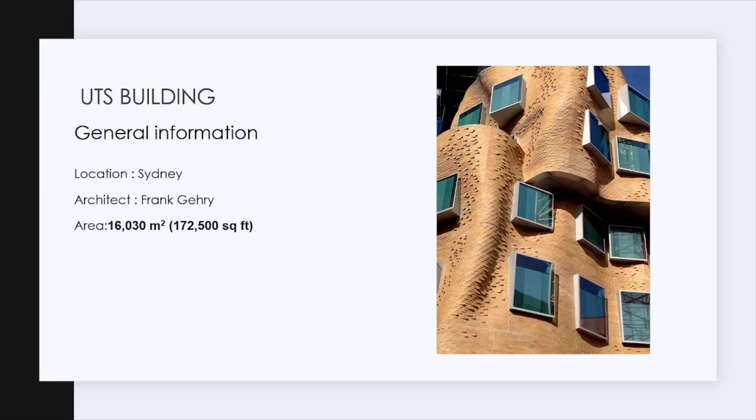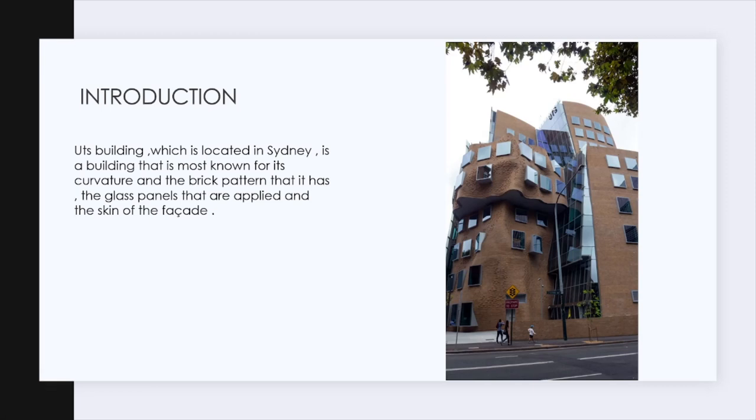So the building's location is in Sydney. The architect himself is Frank Gehry. I wanted to introduce you to this building since it is the most known for its curvature and the brick pattern that it has, the glass panels that are applied within that building, and the skin of the facade.